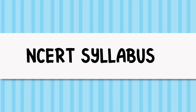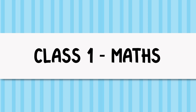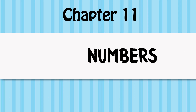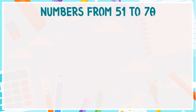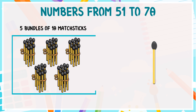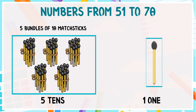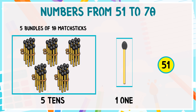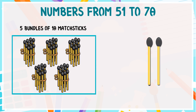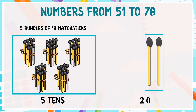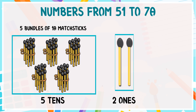NCERT labels for Class 1 Maths, Chapter 11: Numbers from 51 to 70. These are five bundles of ten matchsticks in each, so it is five tens and one one, so five tens and one one is equal to 51. These are five bundles of ten matchsticks in each, so it is five tens and two ones, so five tens and two ones is equal to 52.